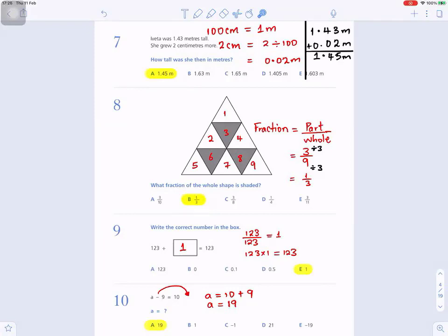Question number 9: Write the correct number in the box. 123 divided by a number equals 123. The key here is the number does not change. 123 and 123 on the left and right. Whenever it doesn't change, you're either dividing by 1. Because dividing by 1 does not change the answer. So your answer is 1. Remember, when you divide by 1, the answer stays the same. When you multiply by 1, the answer stays the same.